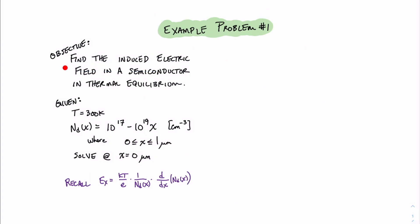For both of our example problems, our objective is to find the induced electric field in a semiconductor in thermal equilibrium. For this first example, we're given that the temperature of the semiconductor is 300 degrees Kelvin, and that the doping concentration profile is a linear profile given as 10^17 minus 10^19 times the distance x, in per cubic centimeters. We're asked to solve the value of the electric field at x equals zero micrometers. The equation for the electric field is recalled at the bottom. The first step is taking the derivative of this N_d(x) equation. Since it's a linear equation, the derivative will be minus 10^19.